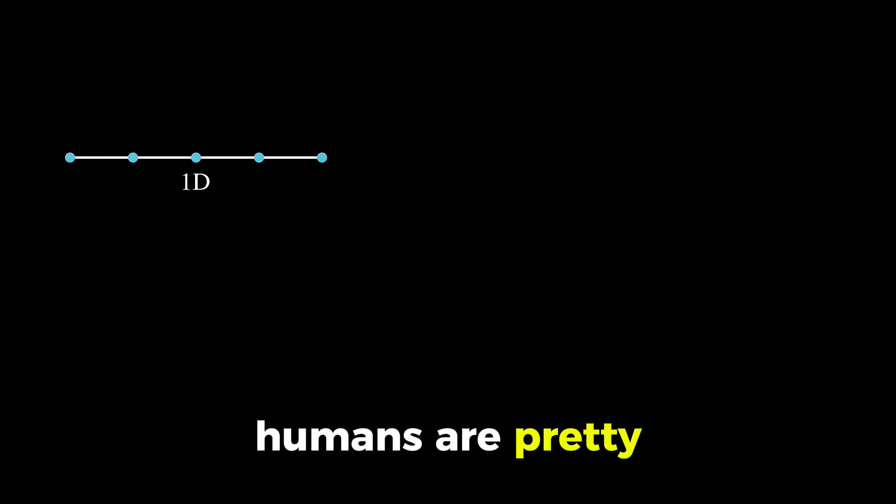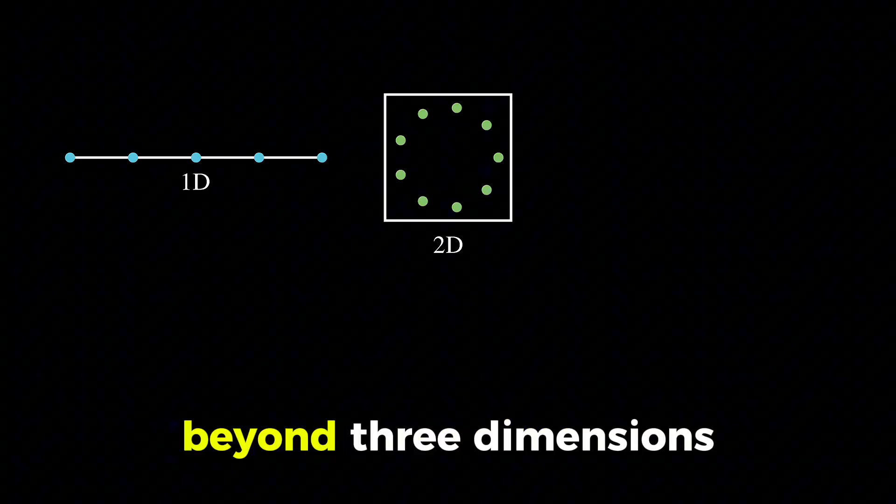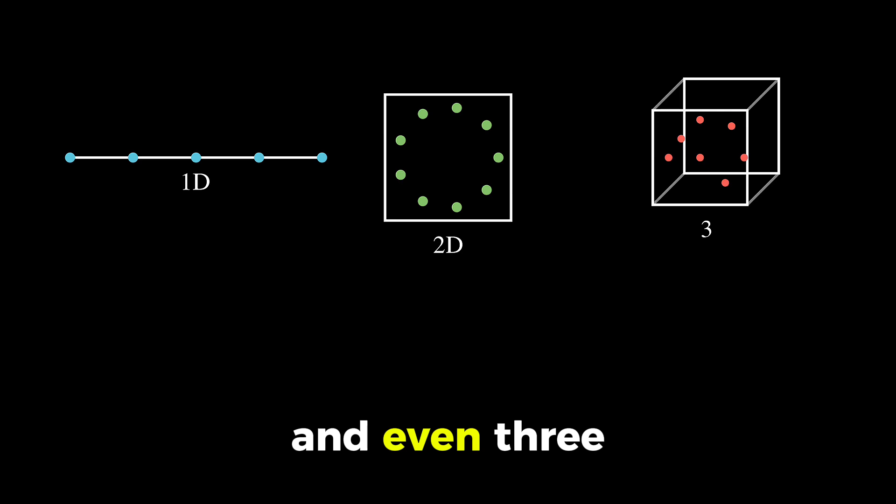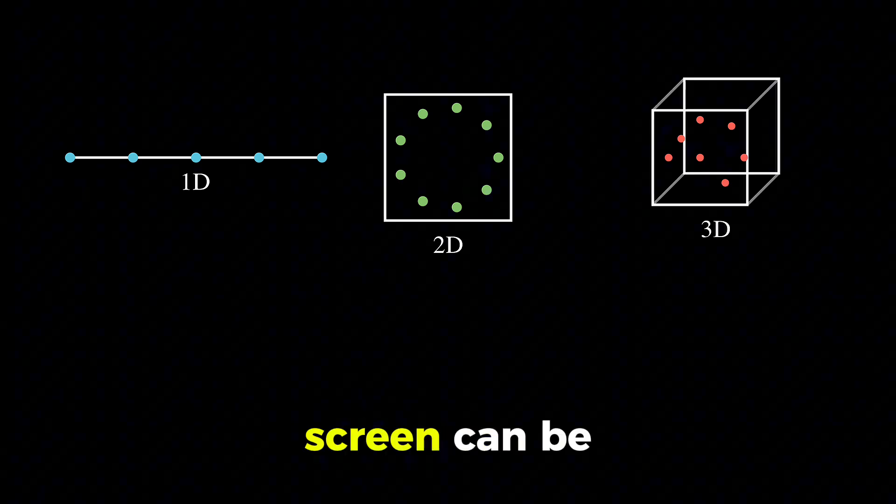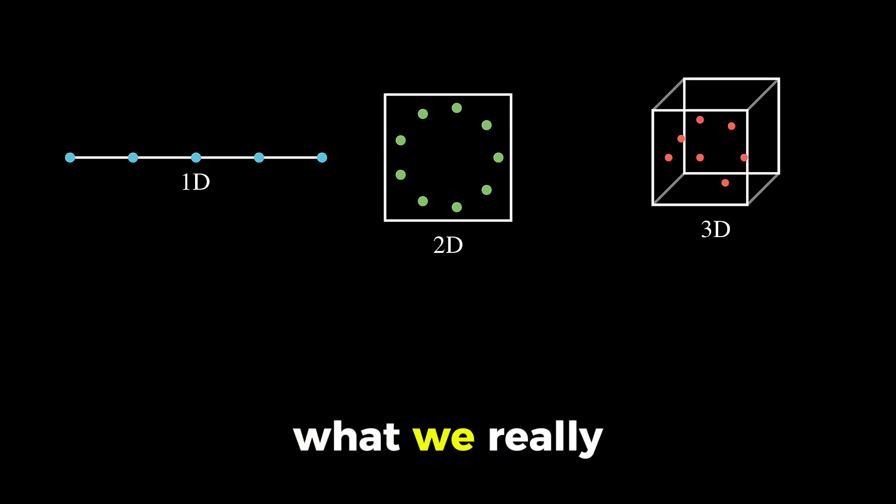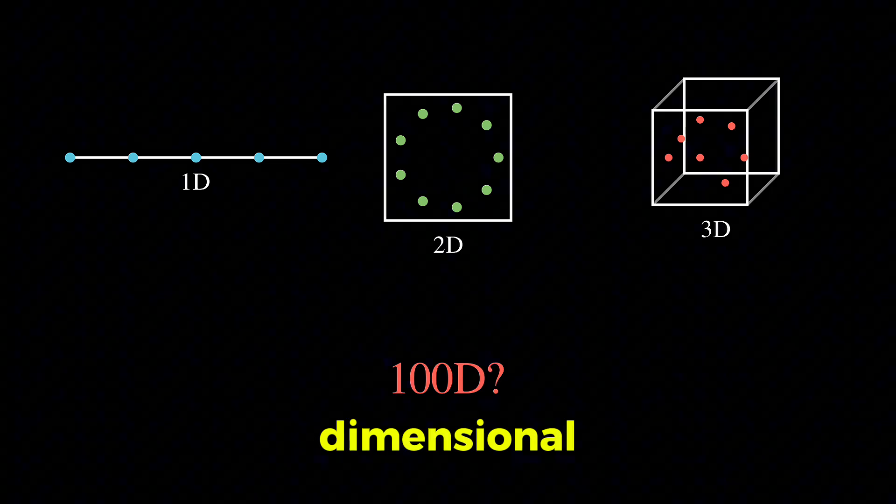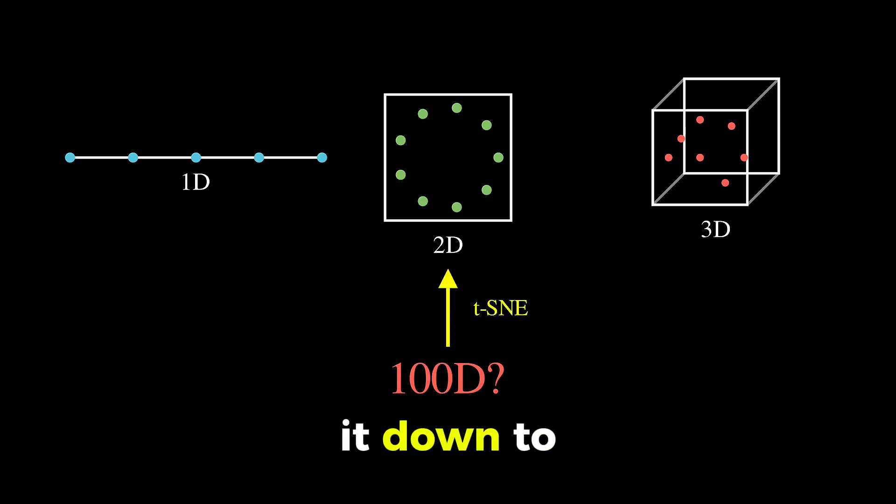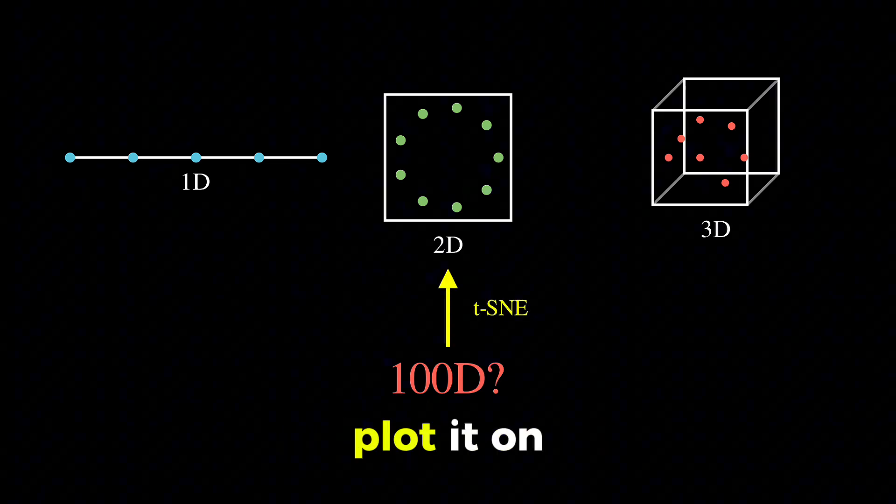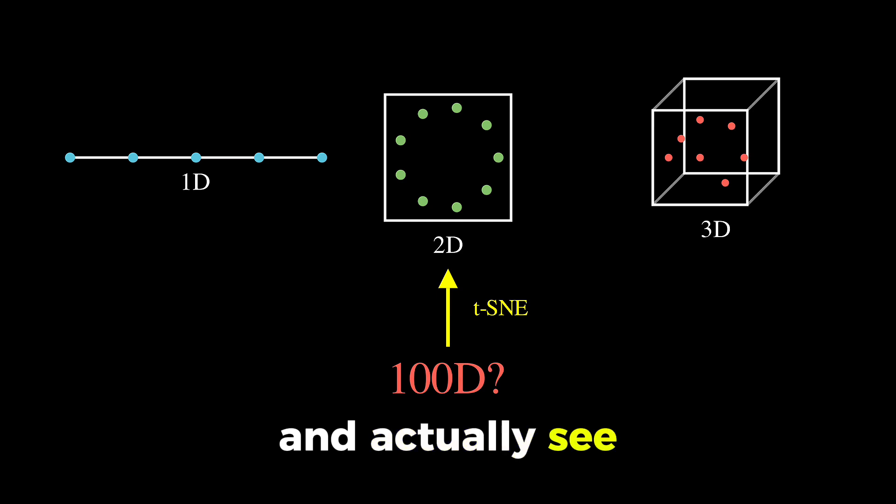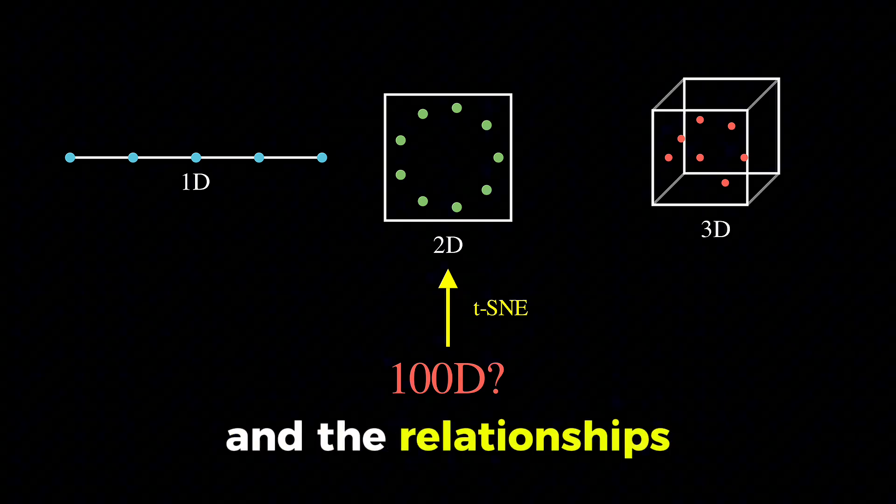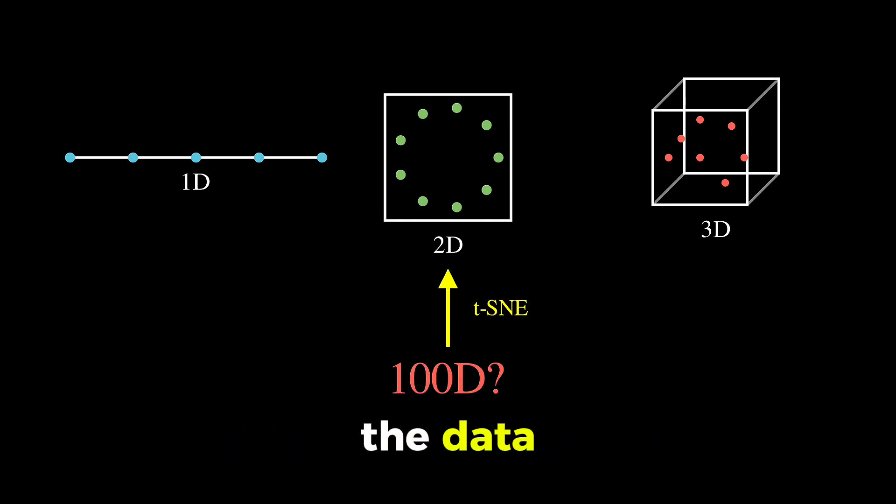The thing is, we humans are pretty bad at visualizing anything beyond three dimensions. And even three dimensions on a flat screen can be tricky. So what we really want is to take this high-dimensional data and squash it down to two dimensions so we can plot it on a screen and actually see patterns and clusters and relationships that exist in the data.